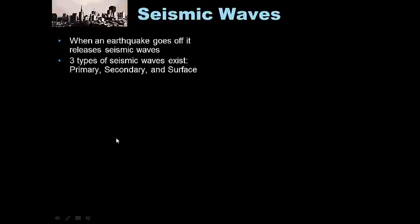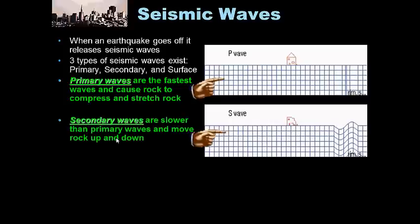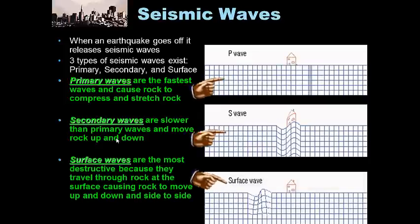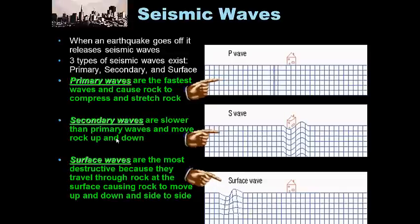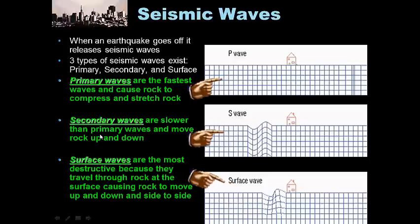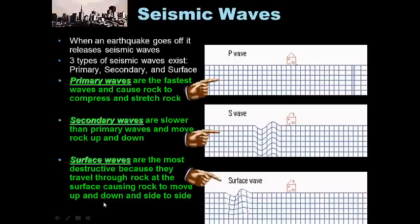When an earthquake goes off it releases three types of seismic waves: primary, secondary, and surface waves. Primary waves are the fastest and cause rock to compress and stretch. S waves are slower than primary waves and move rock in an up-and-down motion. Surface waves are the most destructive because they travel through rock at the surface, causing rock to move in a circular, up-and-down, side-to-side motion — very dangerous. Primary waves are the fastest, secondary waves are the second fastest, and surface waves are the slowest but cause most of the damage.